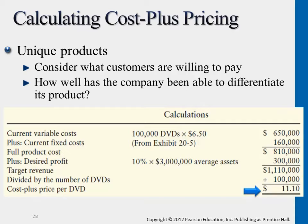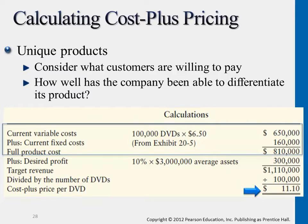You have fixed costs of $160,000, plus the variable costs altogether. The total cost for generating these special DVDs is $810,000, and your desired profit for this season is $300,000.